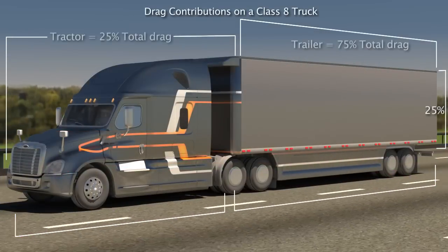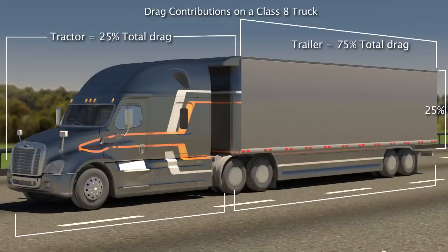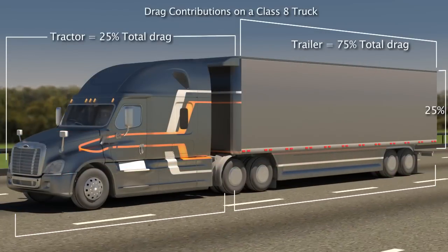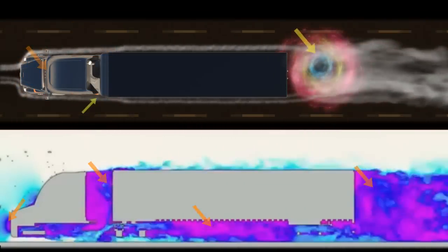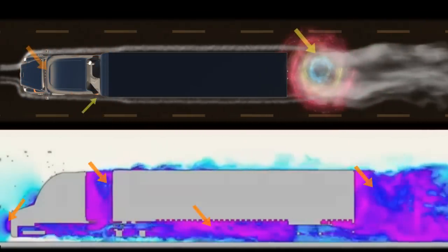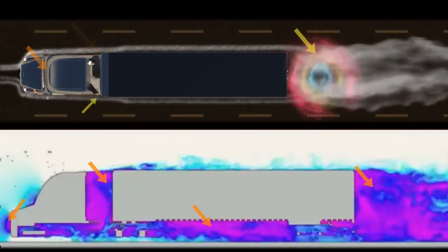There are numerous locations on trucks that are responsible for proportionately large percentages of the drag. By pinpointing and addressing these low-pressure hotspots, PlasmaStream's technology will lead to significant improvements in fuel economy.